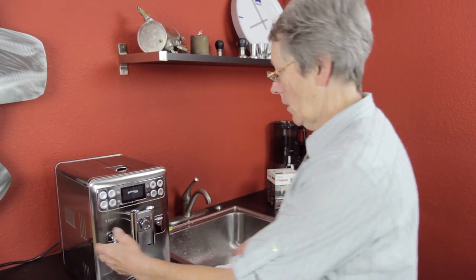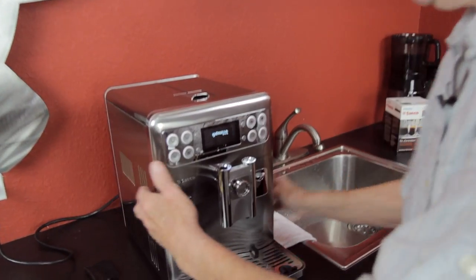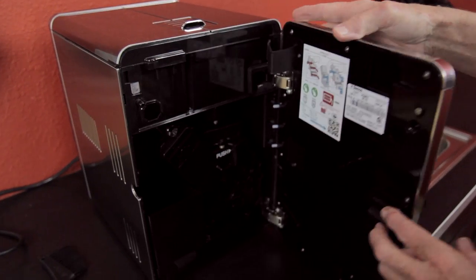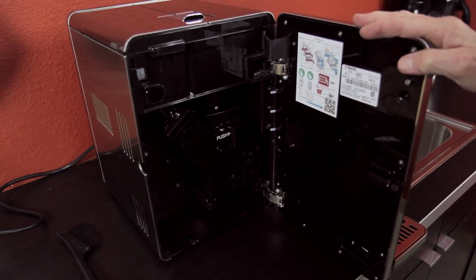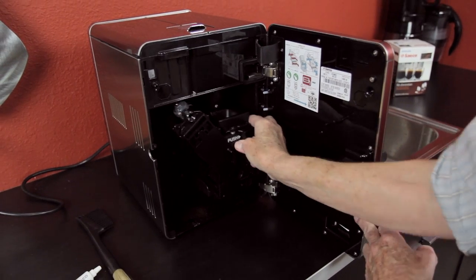On your machine, there's always a door to get into it. This one happens to be on the front. On the Saeco Exprelia Evo, right here is the brew unit.